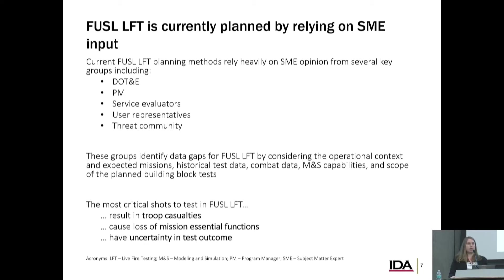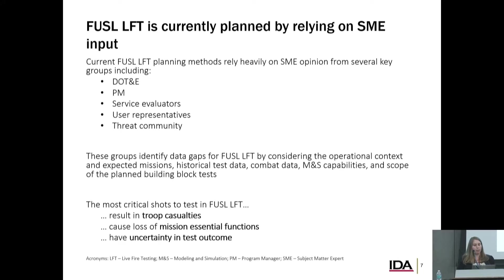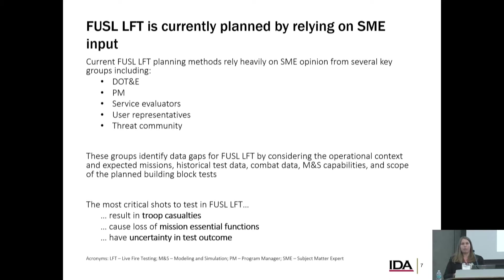There isn't a specified process — it's really when the group of experts agree. The most critical shots to test in FUSIL generally result in troop casualties, because we care when any warfighter is injured and we'd definitely want to know about that prior to fielding. They also result in a loss of mission essential functions — we want to characterize the residual capability if there's some type of damage. And there's some uncertainty in the test outcome: if we're pretty certain we know what's going to happen, we don't need to test there. We want to test situations where we're more uncertain about the outcome, because we learn more from those conditions.